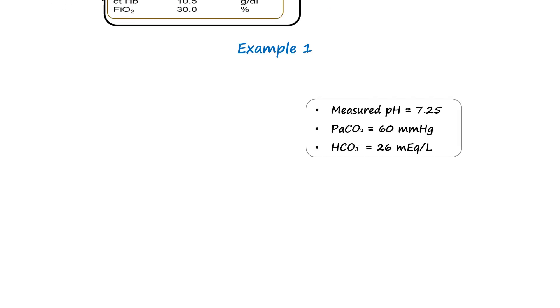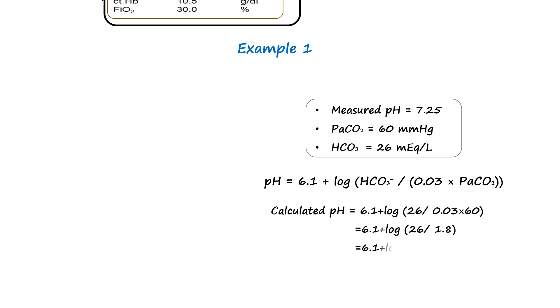To illustrate this concept, suppose the measured pH is 7.25, the PaCO2 is 60 mmHg, and the HCO3 is 26 mEq per litre. We now use the Henderson-Hasselbalch equation to calculate the expected pH using the measured bicarbonate and PaCO2. From the calculation, the calculated pH is approximately 7.26.